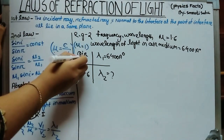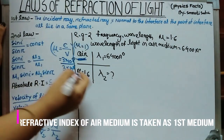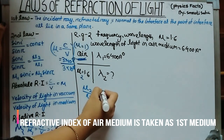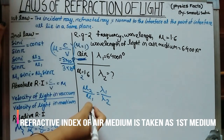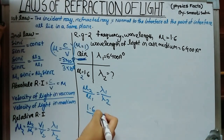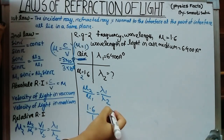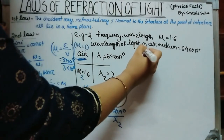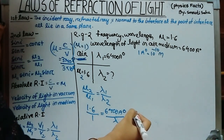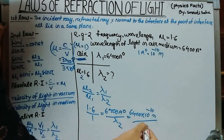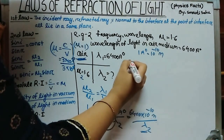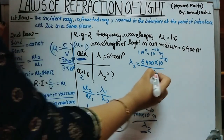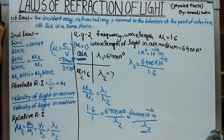Using mu2/mu1 = lambda1/lambda2: substituting 1.6/1 = 6400 × 10⁻¹⁰ m / lambda2. Therefore, lambda2 = (6400 × 10⁻¹⁰) / 1.6. Calculate this value for the wavelength in the second medium.